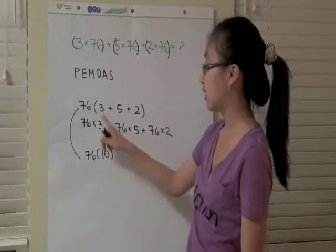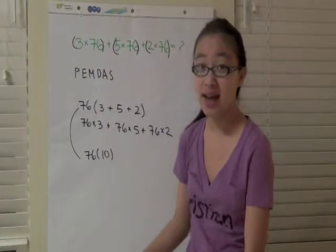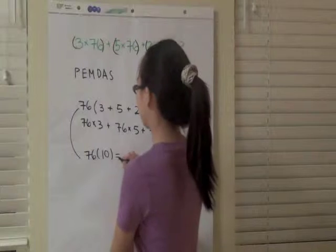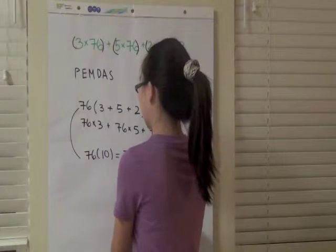And especially since in this case, 3 plus 5 plus 2 equals 10, it makes your job a lot easier because you can just use the trick where you just add a zero.